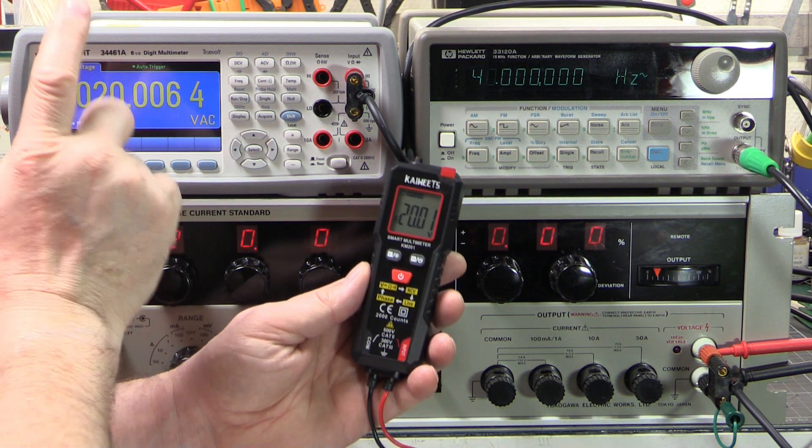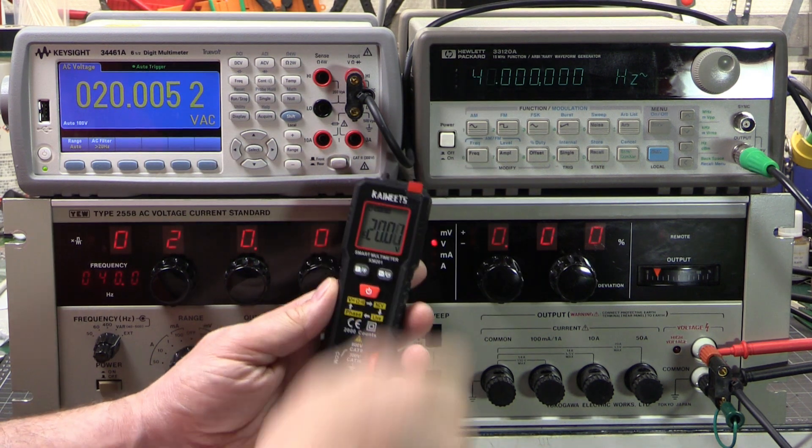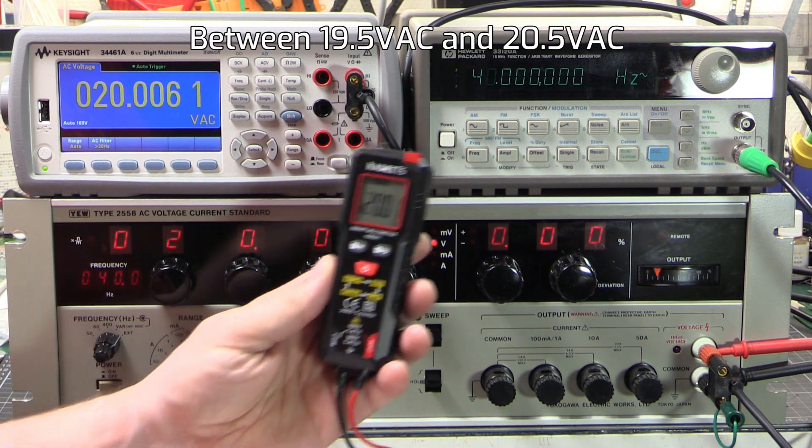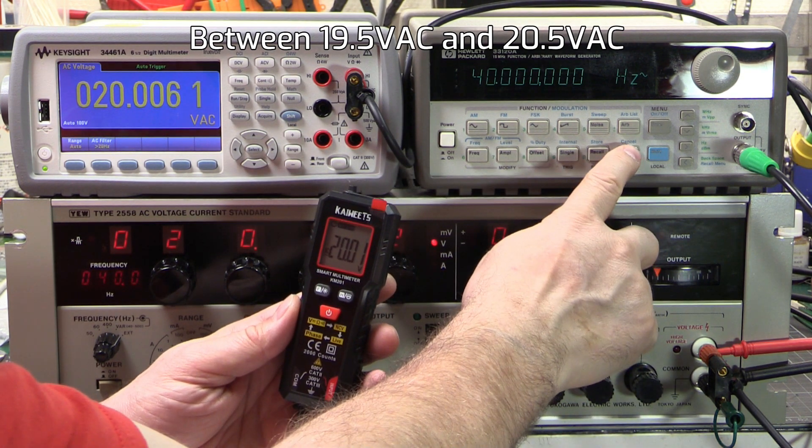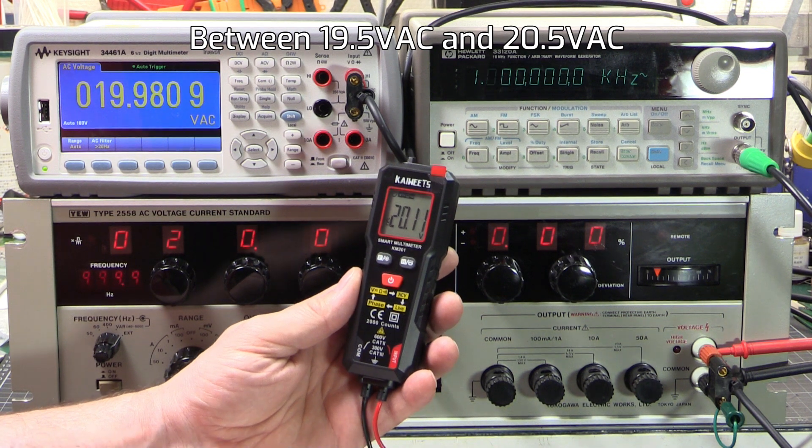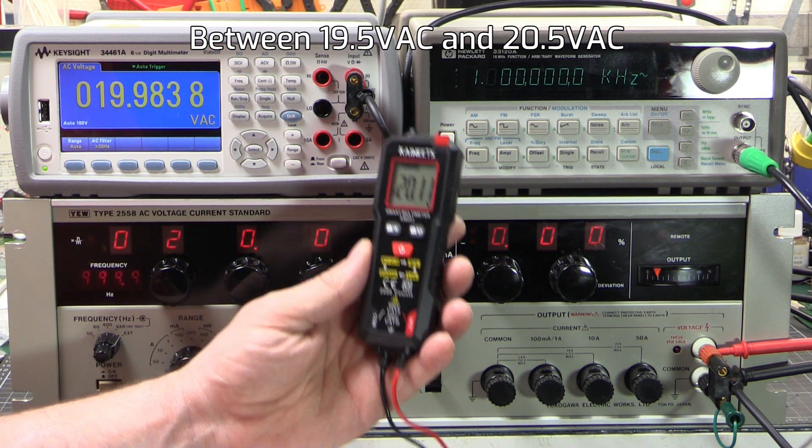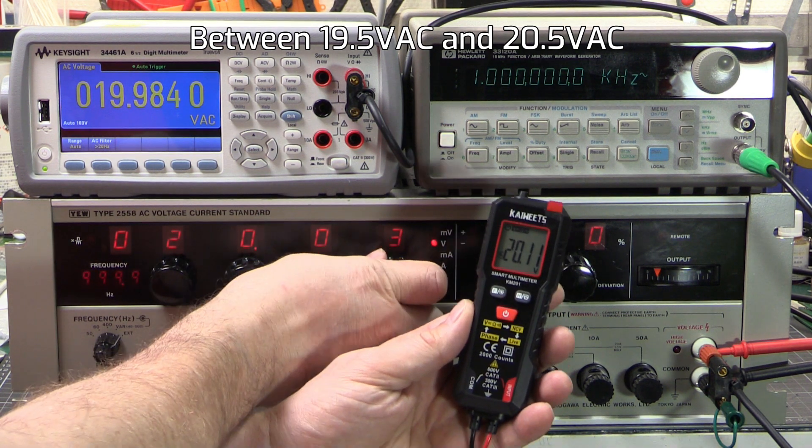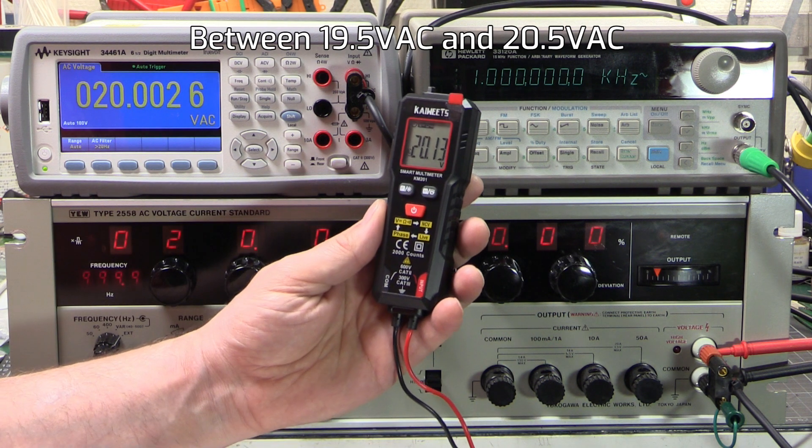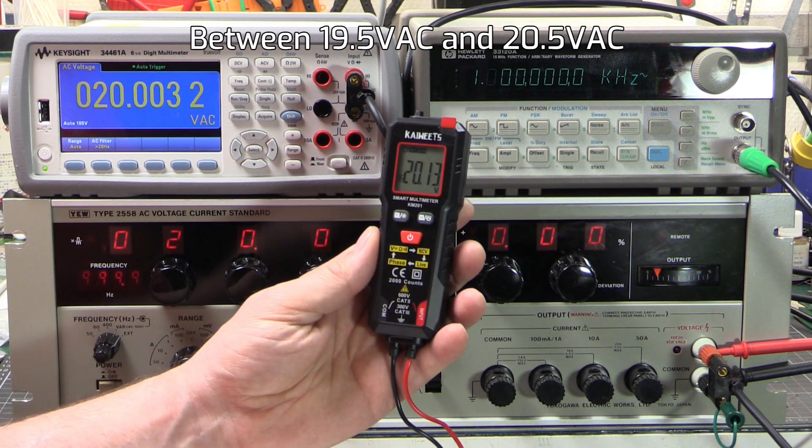Alright. Top of the 20 volt range. And we got 20.00 volts. 20.001 at 40 hertz. That's fine. We've got to be below 20.5. So that is spot on. And once again, 1 kilohertz. And we are 20.1. That's below 20.5. That is also spot on. We can actually wind that just a little bit. There we go. 20.13. We've got to be below 20.5. So that is also good.